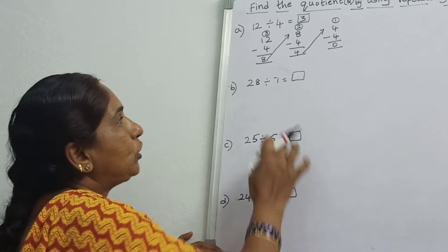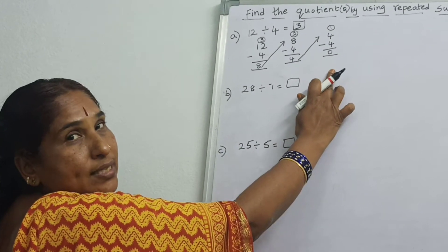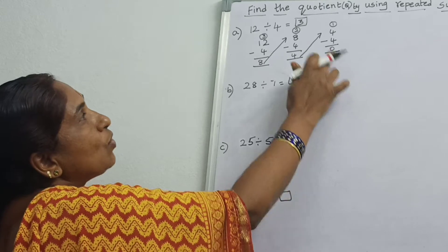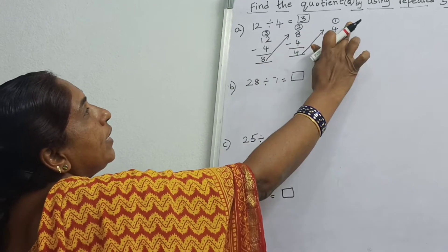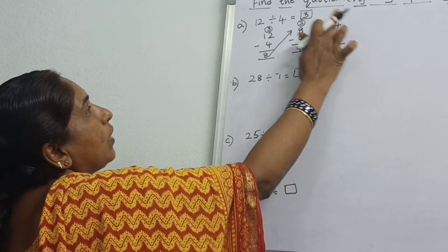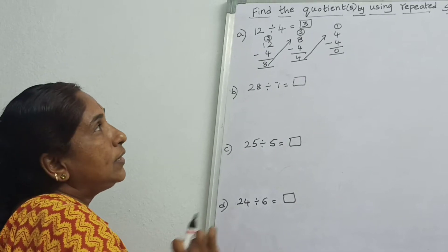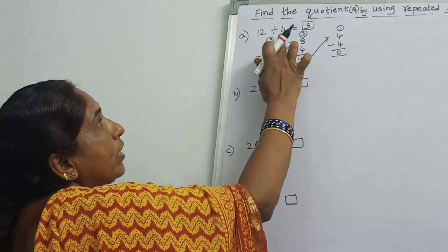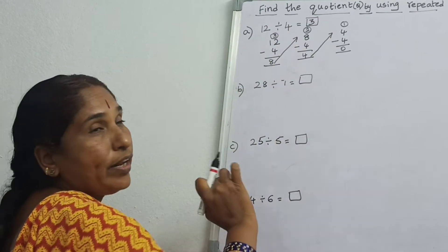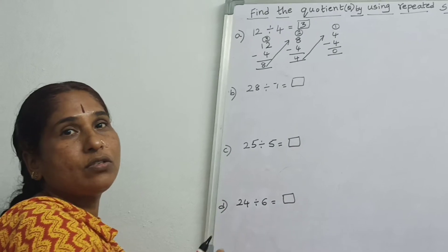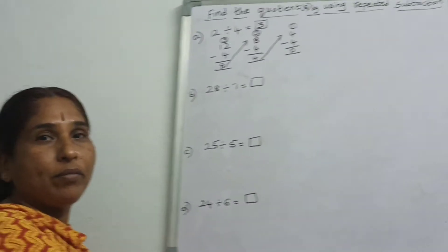So 12 divided by 4 is equal to 3. Repeated subtraction — you subtracted repeatedly till you got 0, 3 times. And see, here you get the table also: 4 threes are 12, or 3 fours are 12.